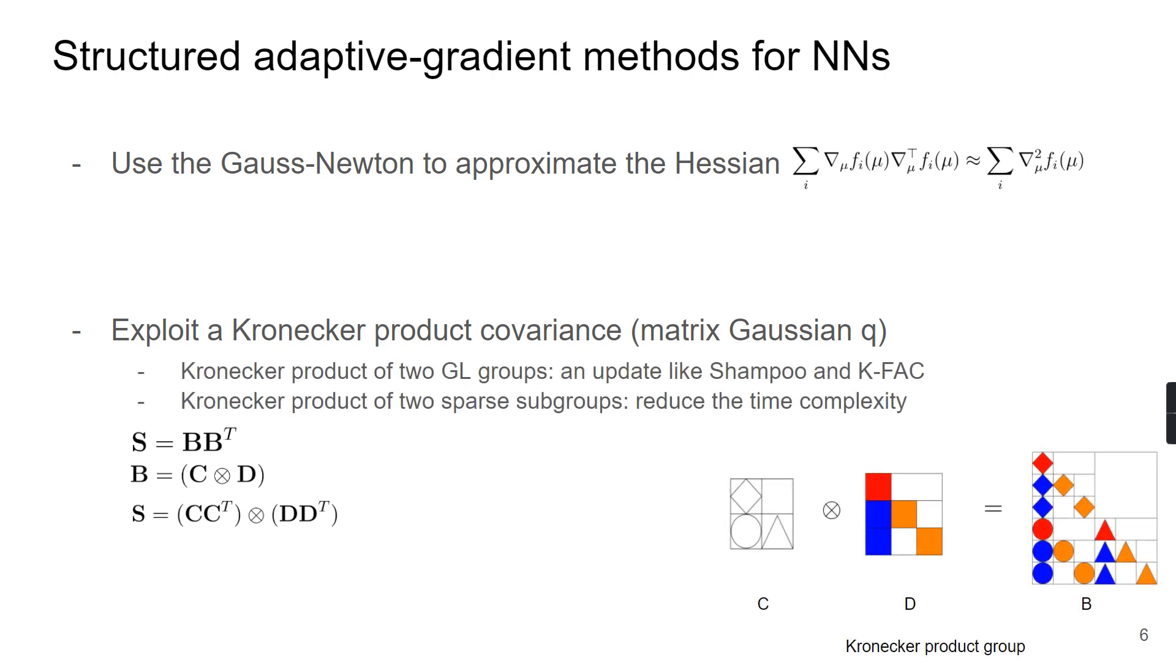When we use a Kronecker product of two general linear groups, our update is like Shampoo and K-FAC. And this update has a similar iteration cost as K-FAC. If we use a Kronecker product of two sparse subgroups, we can further reduce the iteration cost of our methods. And our method is completely different from existing natural gradient methods using deep learning. Existing natural gradient methods use the empirical Fisher defined by the function f, while we use the Fisher information matrix of the Gaussian. And our methods do not suffer from the same issues for the empirical Fisher, and our methods also do not require us to use the dampening technique.